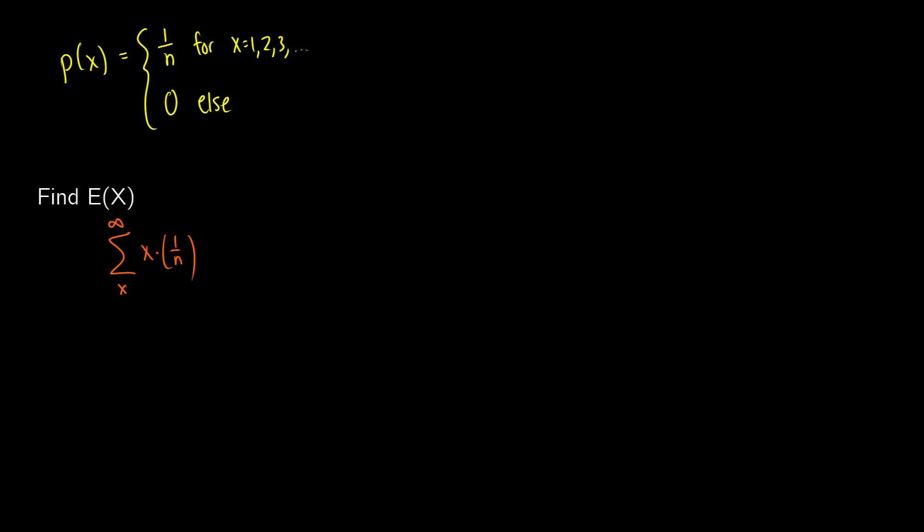Now this looks like something that we can do a little bit more with, because if we plug in values for x, this is going to be 1 times 1 over n, plus 2 times 1 over n, plus 3 times 1 over n, plus so on. So using this fact, perhaps we can get a little bit more clever with it. So we could factor out 1 over n from each of these, and what we'd be left with is 1, plus 2, plus 3, plus 4, plus so on. And this is going to go up to some value.